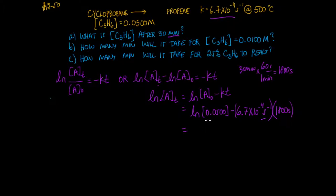So the natural log of 0.0500 is minus 2.996. We have subtraction here from the formula. Multiply these two and we get a value of 1.206. So the natural log of A at time t is negative 4.202.